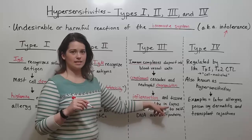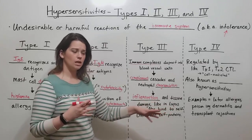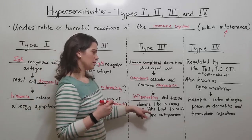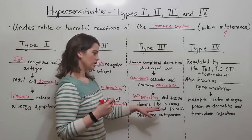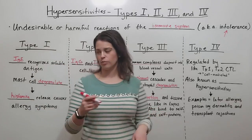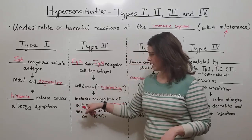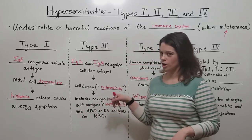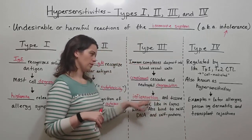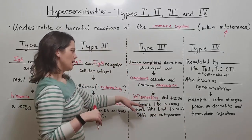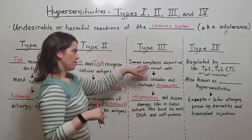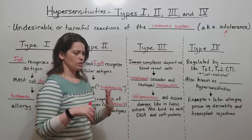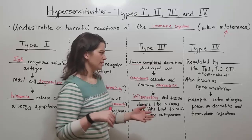An example of this is the autoimmune disorder lupus, which you might have heard of. Lupus is where antibodies bind either to self-DNA or self-proteins. When self-antigens are recognized by antibodies, we call that autoimmunity. Type 3 hypersensitivities are another place where autoimmune disorders happen, specifically caused by these immune complexes leading to systemic diseases like lupus.